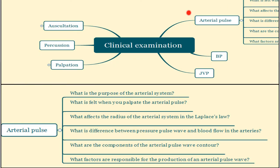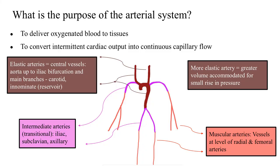The arterial pulse is one of the most vital and one of the most informative signs of the cardiac clinical examination, and this particular topic will be covered over several videos in order to grasp it fully. First off, what is the purpose of the arterial system? Number one, it is to deliver oxygenated blood to the rest of the tissues, and secondly, to convert the intermittent cardiac output — the pulsatile nature of the heart — into a continuous capillary flow in order to distribute this oxygenated blood to the rest of the tissues.